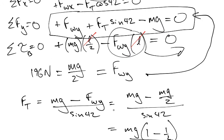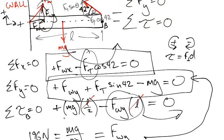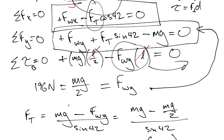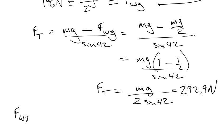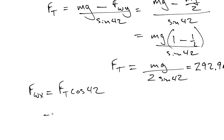Well, at this point, we can now solve for FWX because once we have FT, we can use this equation to solve for FWX. Let's go and do that. FWX from up there is equal to FT cosine 42. So that's going to be 292.9 Newtons times cosine 42. And that's 42 cosine times gives us 217.68. Well, we'll just call it .7.